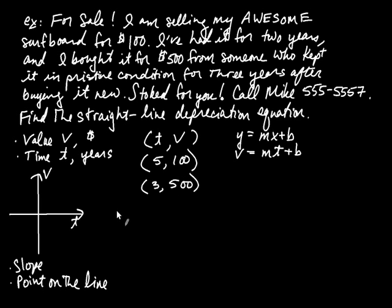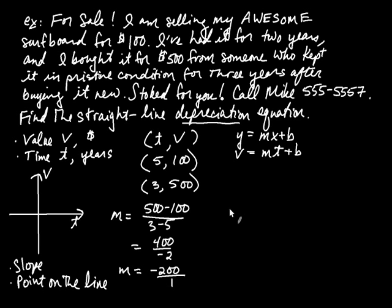So we can find the slope giving these two points. The M is going to be, 500 take away 100 divided by three take away five. And it's going to be 400 divided by negative 2, and that is negative 200. First of all, what's the meaning of negative 200? That's the same thing as negative 200 over 1, which means that every time the time increases by one year, the board drops in value by $200. So that's why this is called a depreciation equation, because the value is depreciating, the slope is negative. So we have our slope. It's negative 200.